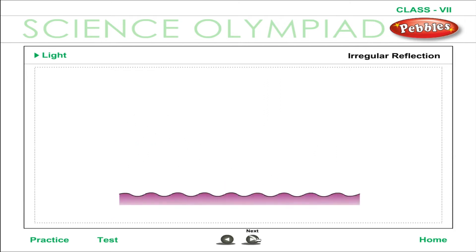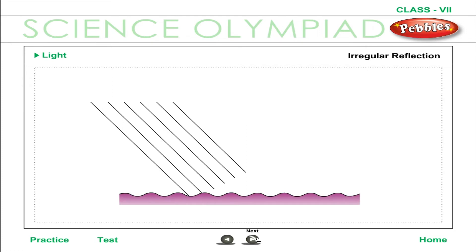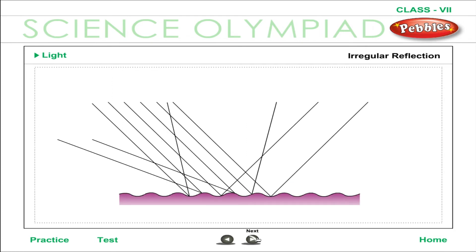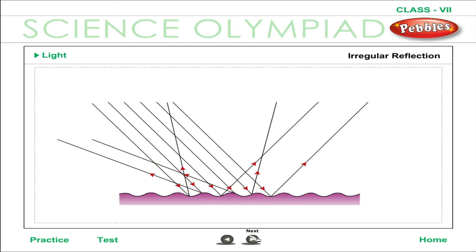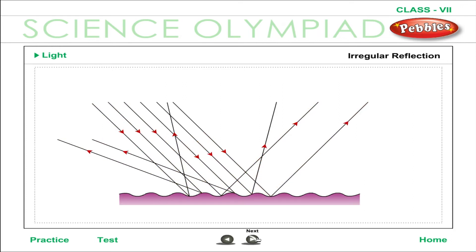Irregular reflection: this takes place when the reflecting surface is not smooth or polished — for example, a wall, wood, paper, or metal. Different parts of the surface reflect the incident light in different directions. If a parallel beam of light is incident on a rough surface, the reflected light spreads over a wide area. Such reflection is called diffused or irregular reflection, and it is diffused light that enables us to see objects around us.